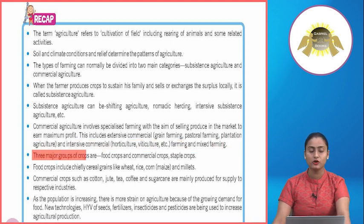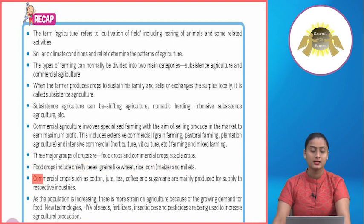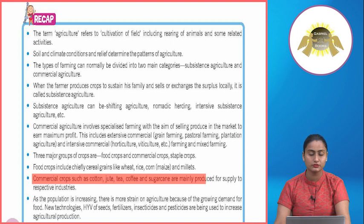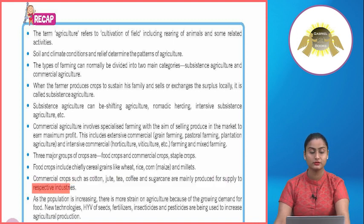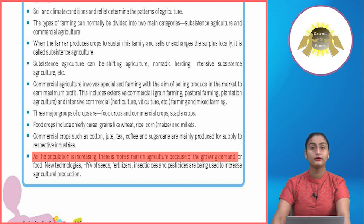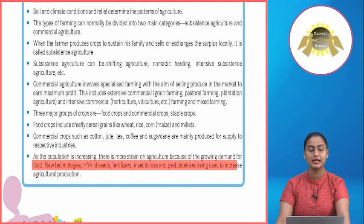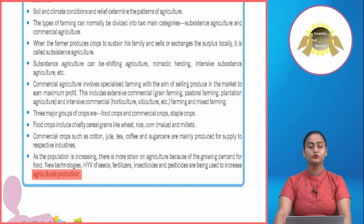Commercial agriculture involves specialized farming with the aim of selling produce in the market to earn maximum profit. This includes extensive commercial grain farming, pastoral farming, plantation agriculture, and intensive commercial horticulture and viticulture. Three major groups of crops are food crops, commercial crops and staple crops. Food crops include chiefly cereal grains like wheat, rice, corn, maize and millets. Commercial crops such as cotton, jute, tea, coffee and sugarcane are mainly produced for supply to respective industries. New technologies, HYV seeds, fertilizers, insecticides and pesticides are being used to increase agricultural production.